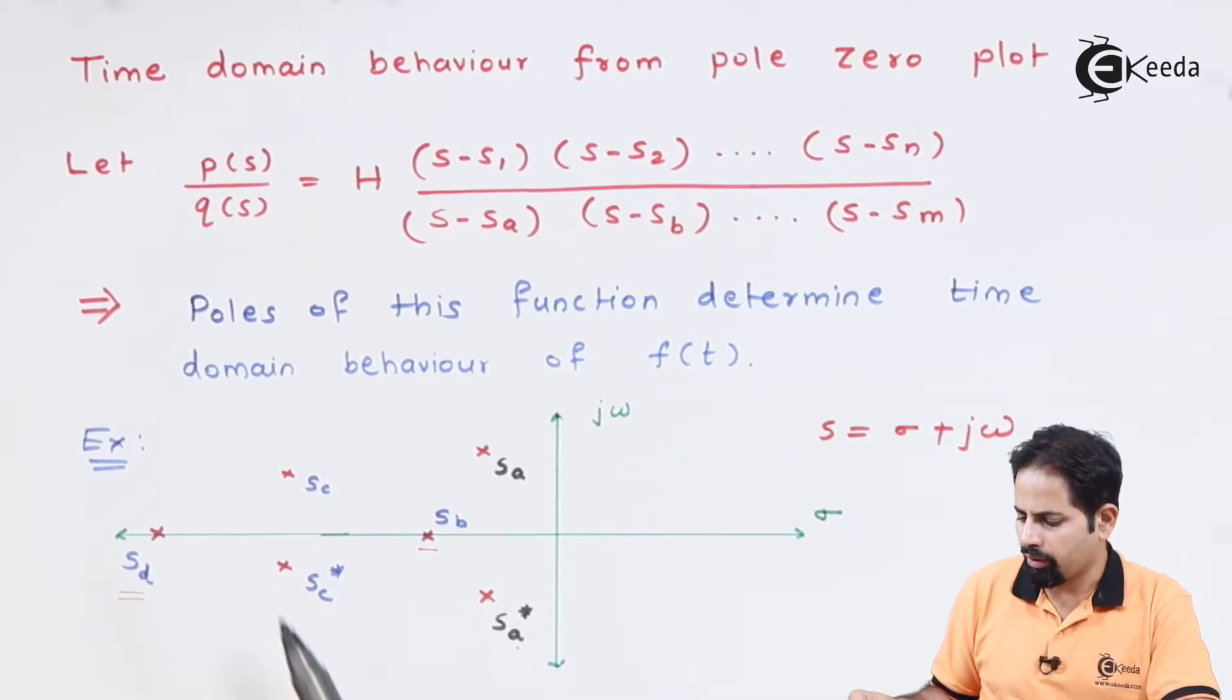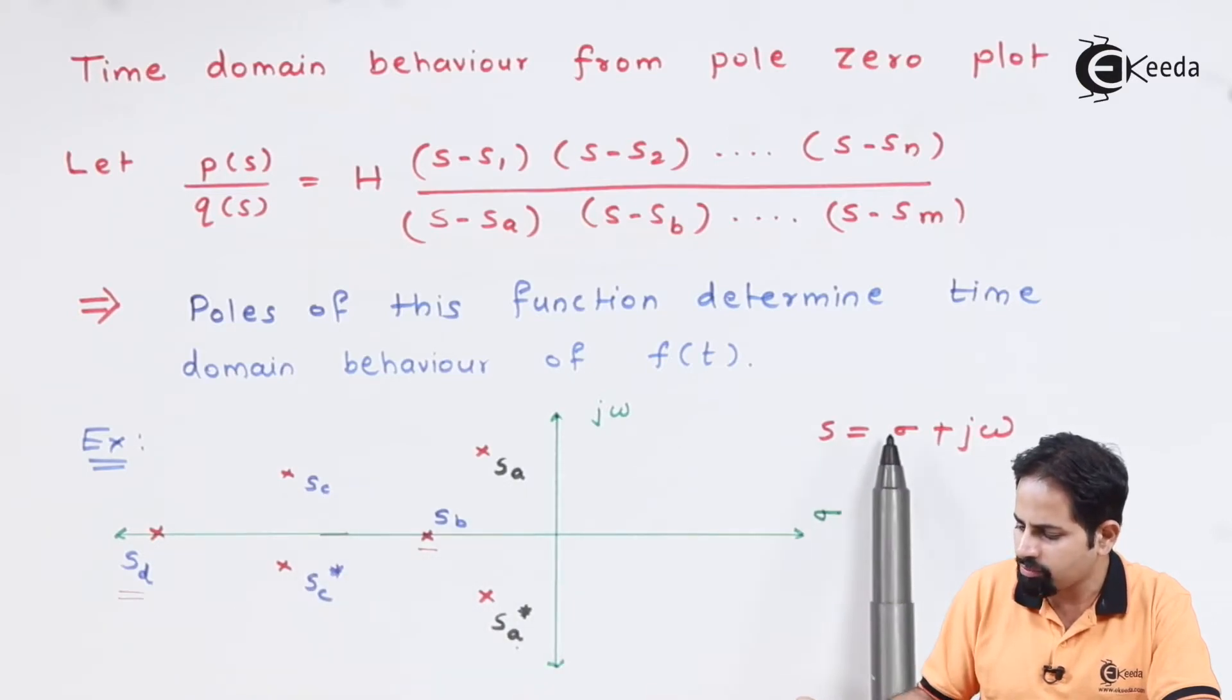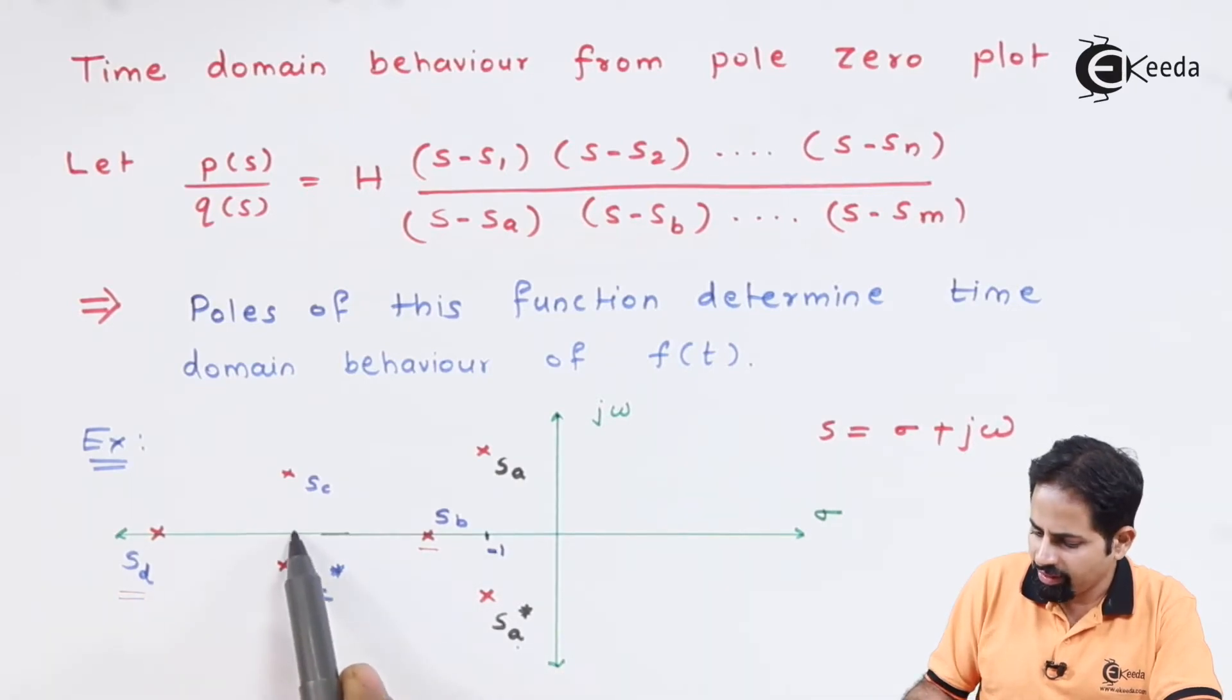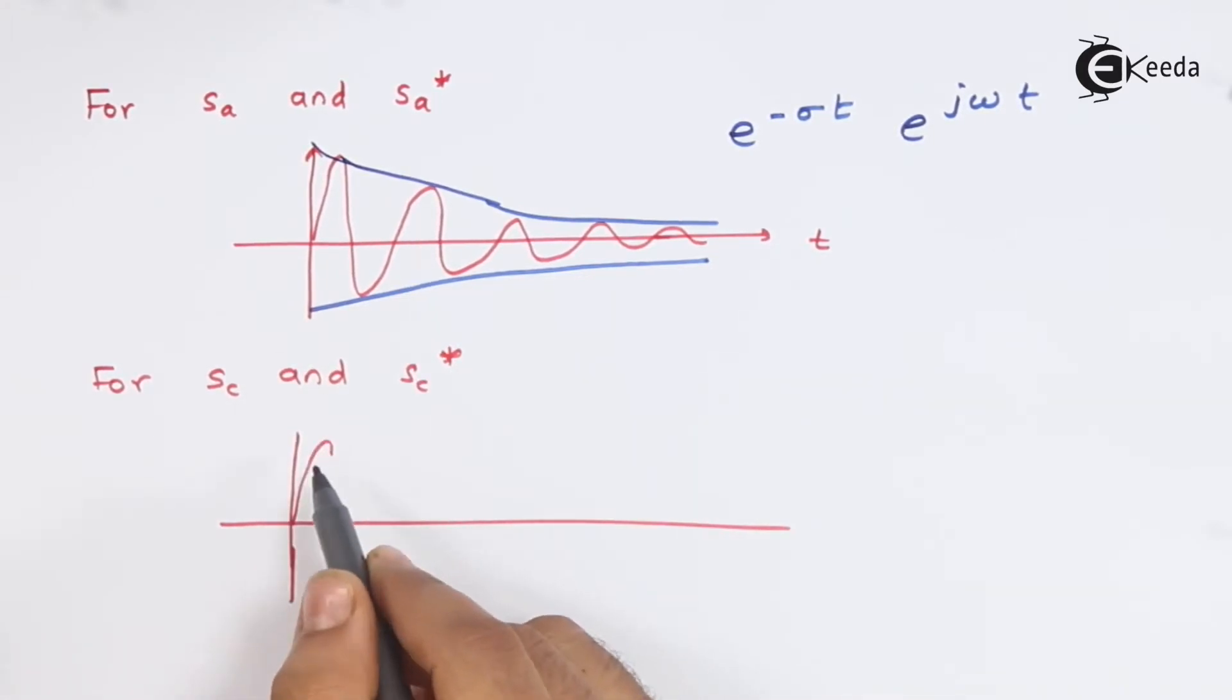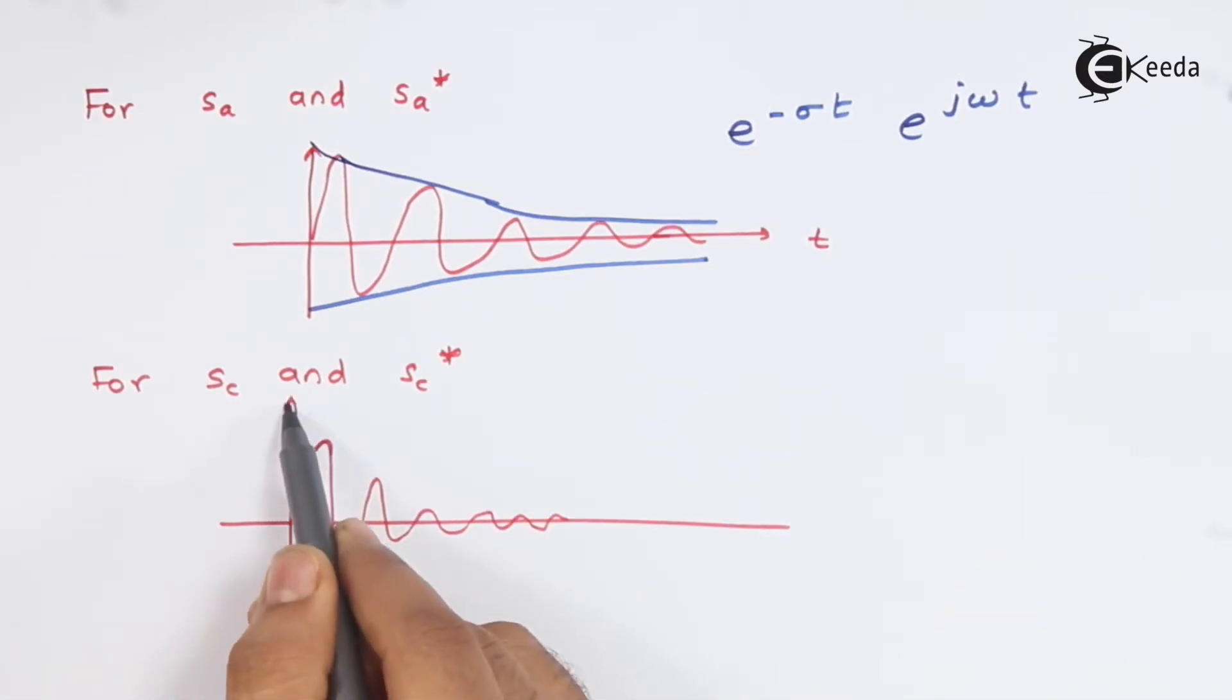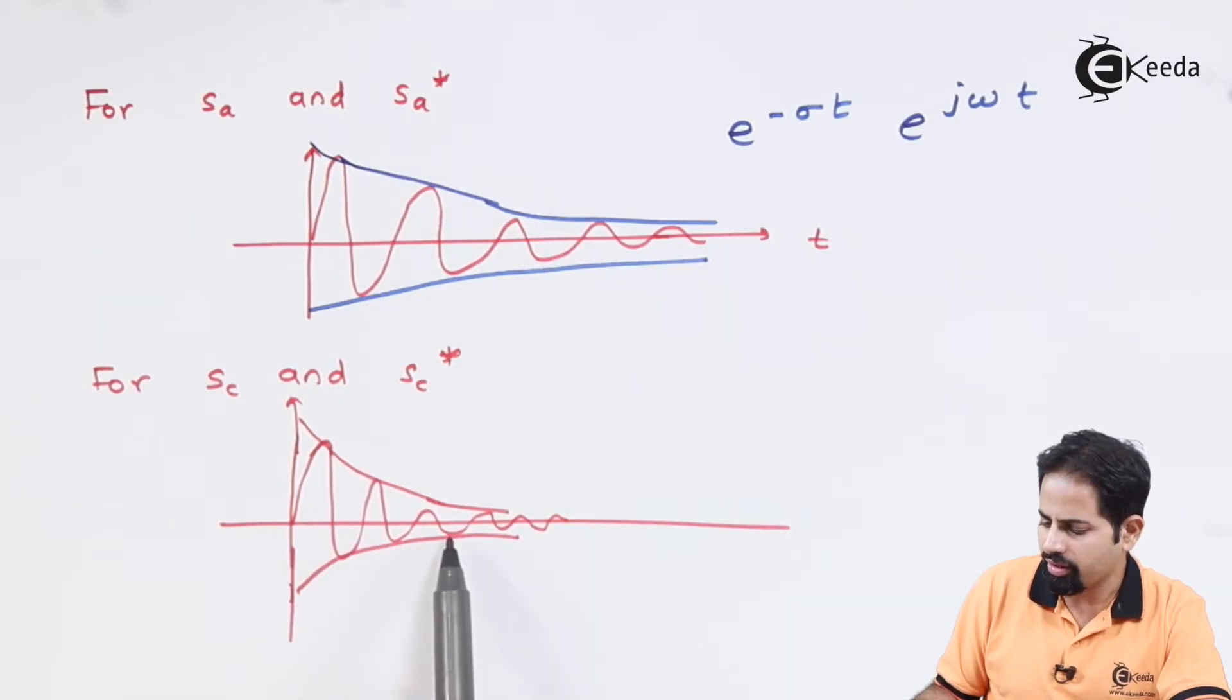Now we have seen this pair. Now what about sc and sc conjugate? It will be the similar graph with less amplitude because here it is further away from this j omega axis. And so sigma is more, suppose sigma here is minus one and let us say it is here minus three. So obviously it is going to decrease with higher rate. So here amplitude is greater than this amplitude because these poles are nearer to the omega axis where these are further away.